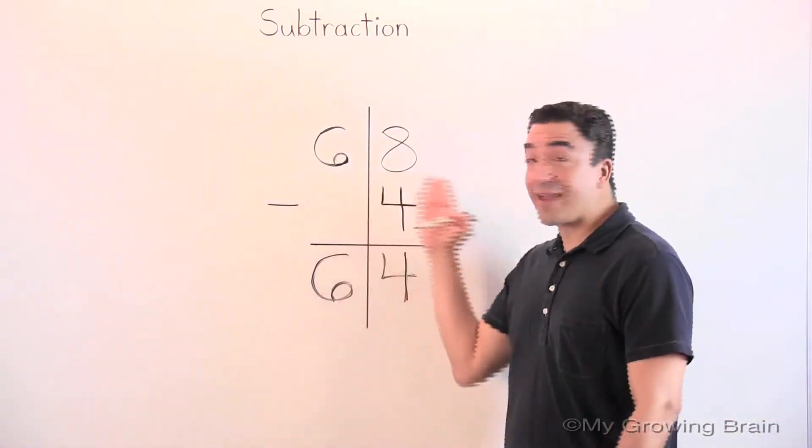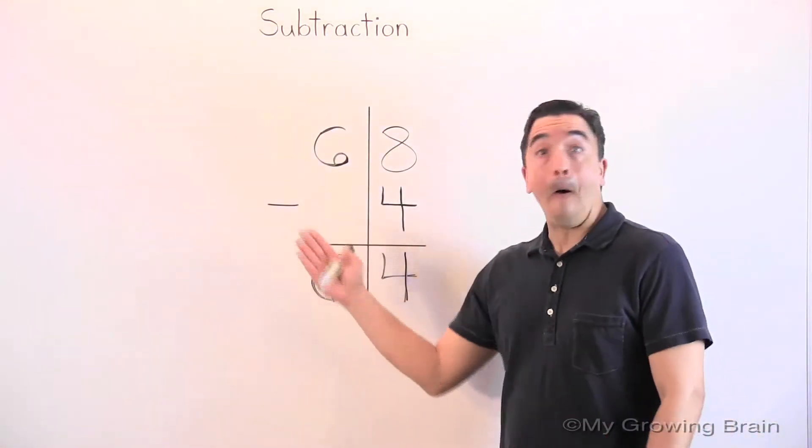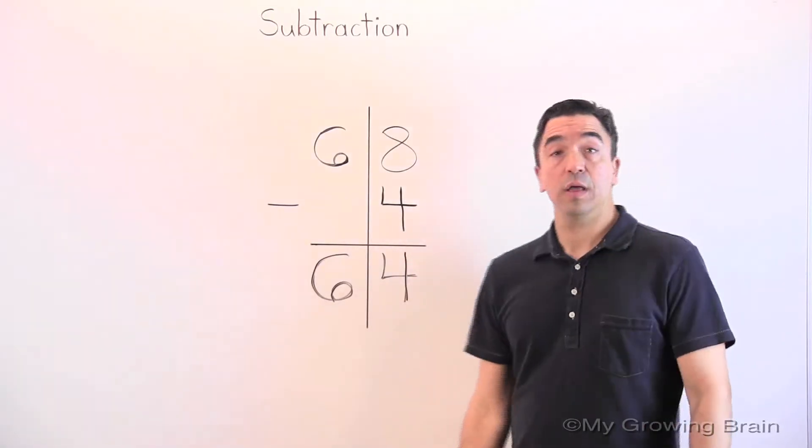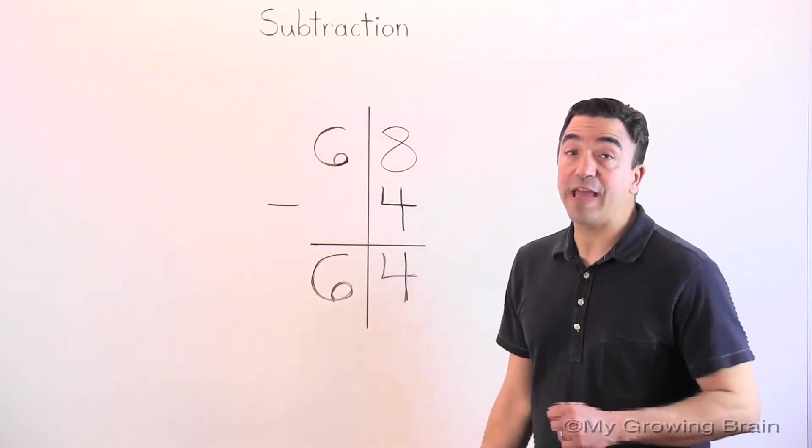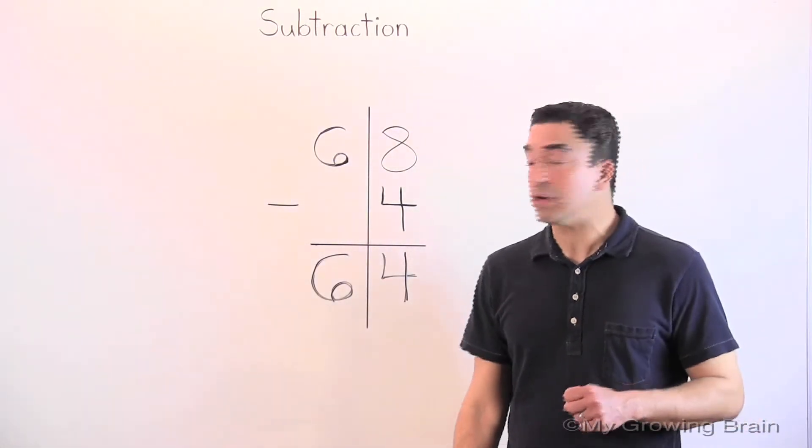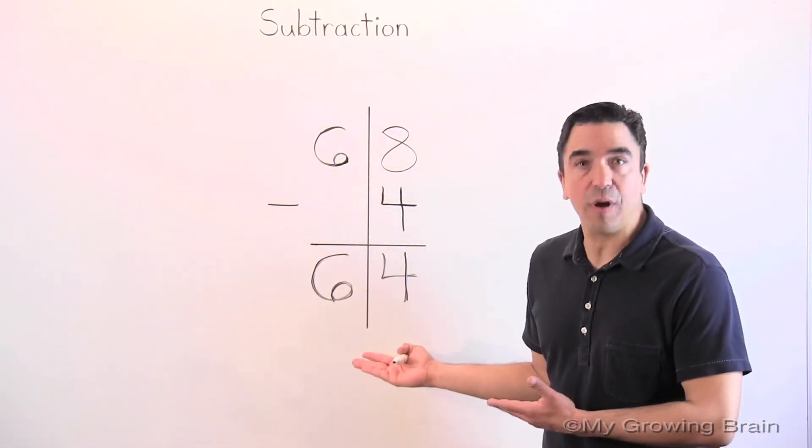So, 68 minus 4 gives us a difference of 64. Don't forget, the difference is the answer to a subtraction problem.